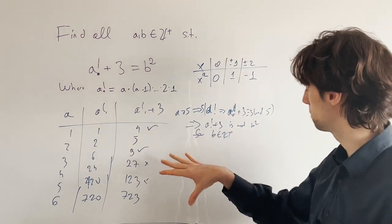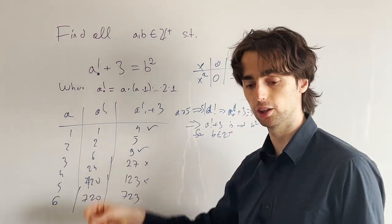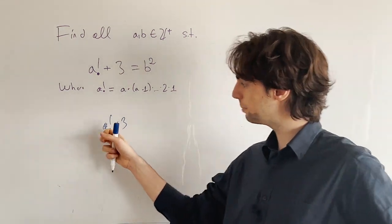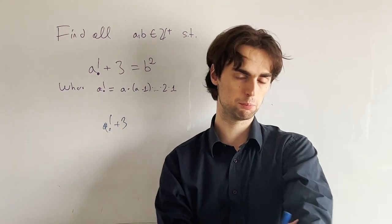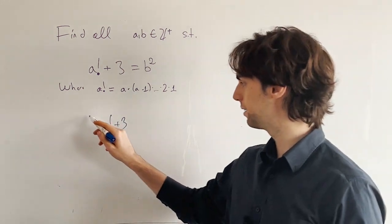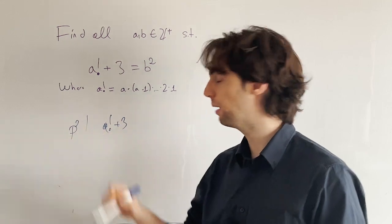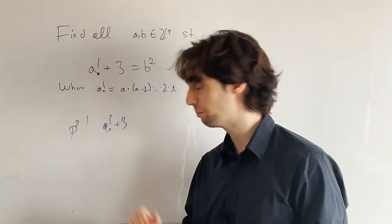Now this is one way of solving the problem, and I want to show you a different way also, which is a factorial plus 3. This is meant to be a square. What does it mean that a number is a square? Well, it means that for any prime that's dividing this thing, it's a prime to the even power that divides this number.